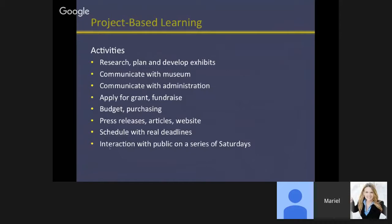Each year they come up with different sets of things and I just support them. They had to communicate with the museum, communicate with the school administration, apply for a grant, fundraise, budget, purchase, write press releases, write articles, create a website, and manage their schedule with real deadlines — all while interacting with the public on a series of Saturdays. This was all on their own time and they were all happy. It was astonishing how enthusiastic they got. For me, the ultimate proof of success is whether they can explain nanoscience to children, because that's the hardest explanation — to explain it to someone who's five or six. They came away with such confidence in their knowledge.